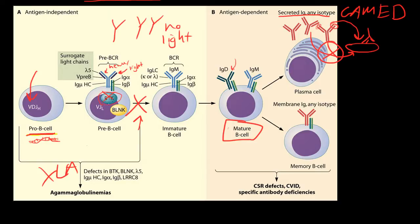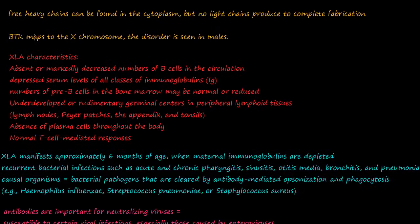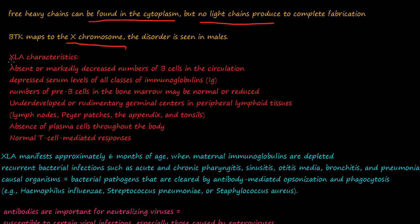When BTK is knocked out, the B cell does not undergo light chain recombination, halting the entire B cell maturation process. Free heavy chains can be found in the cytoplasm, but no light chains are produced to complete the immunoglobulins. BTK maps on the X chromosome, so the disorder is seen exclusively in males. XLA characteristics include absent or markedly decreased B cells and depressed serum levels of all immunoglobulin classes. The number of pre-B cells in the bone marrow may be normal or reduced.